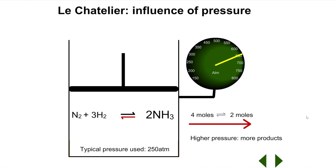However, compared to before the pressure was applied, there will now be more ammonia present at equilibrium. The equilibrium constant value Kc, however, will be the same as it was in the original equilibrium.